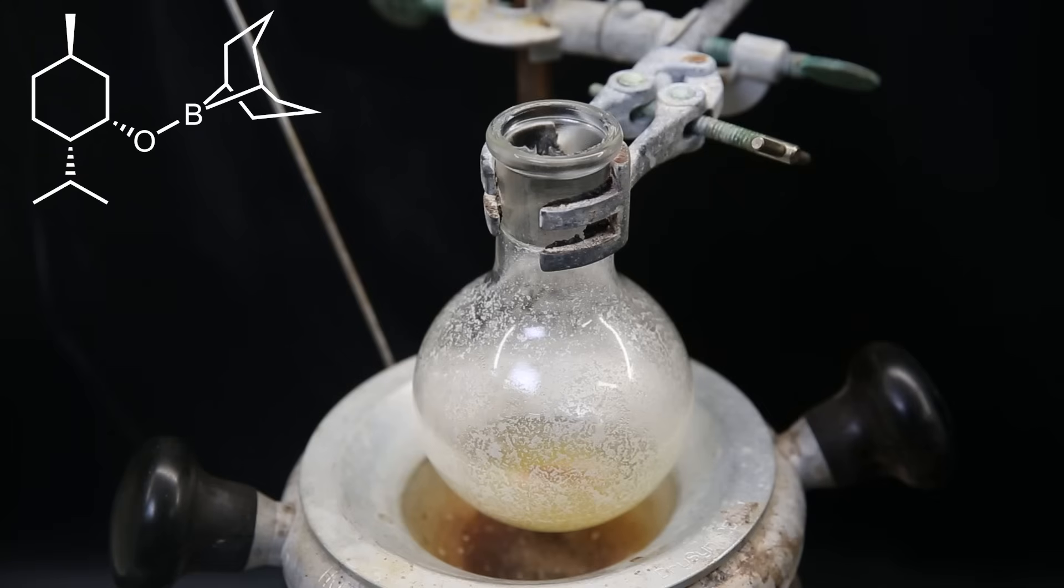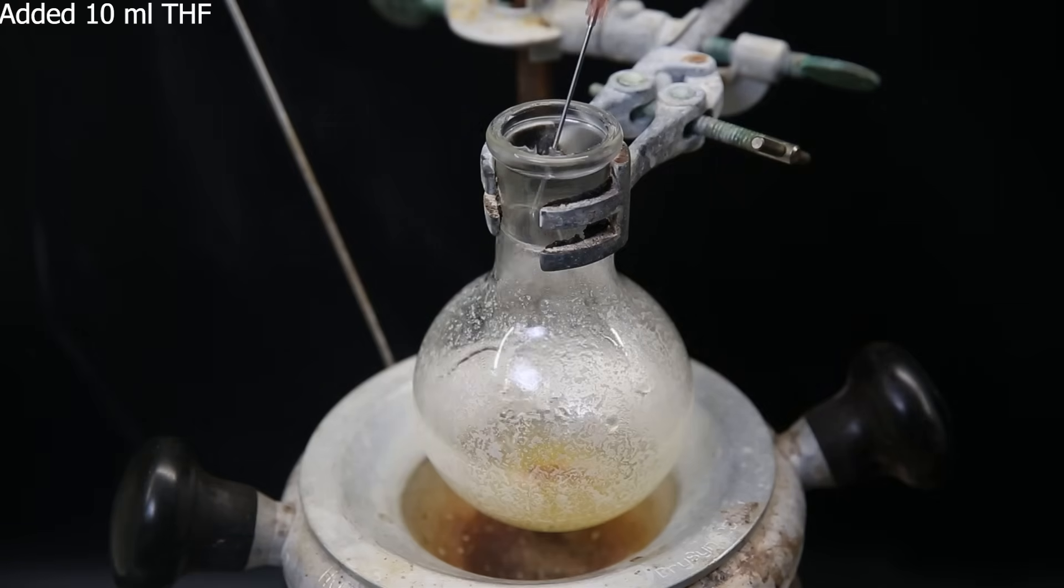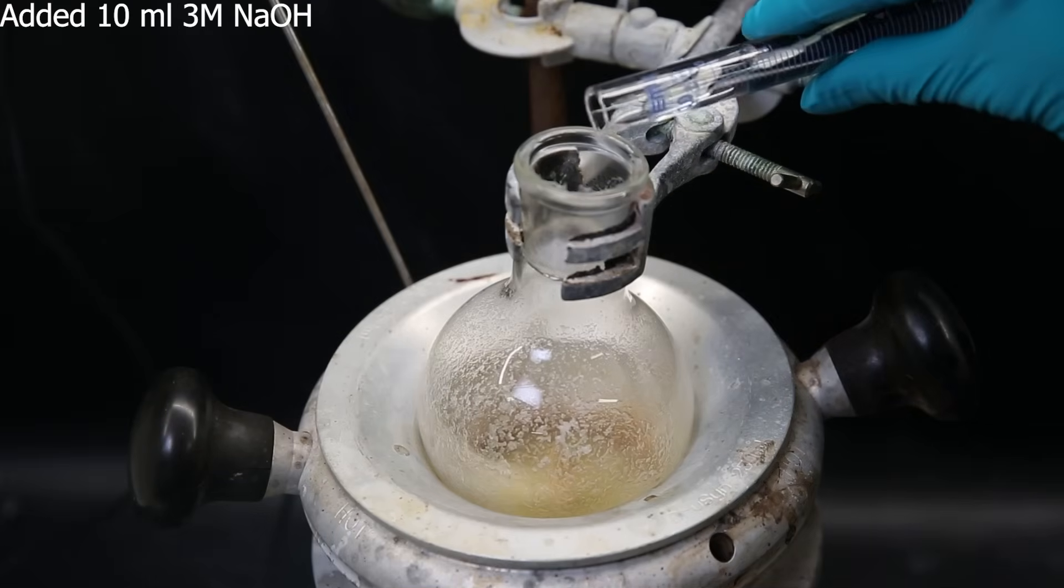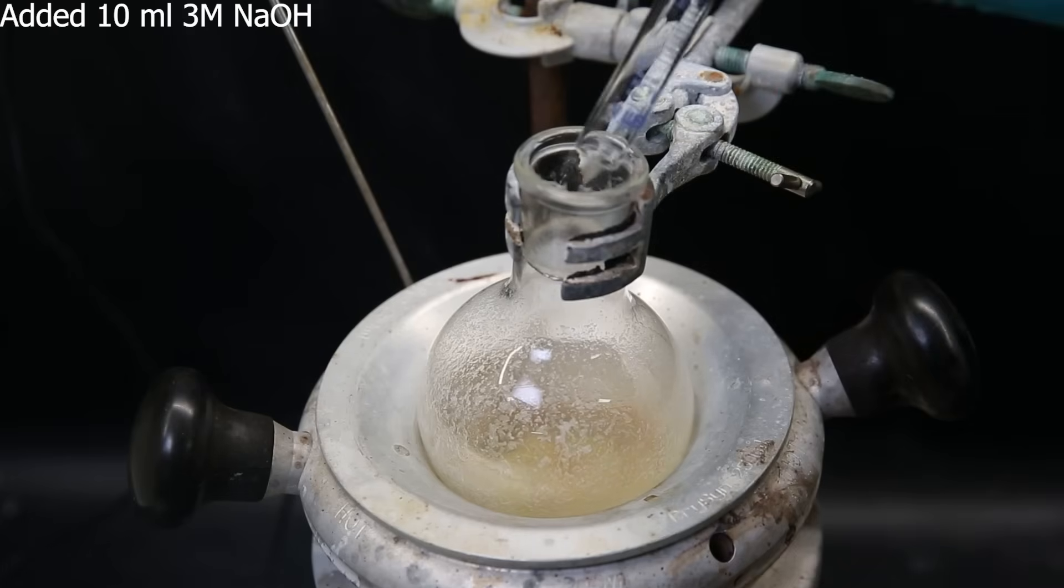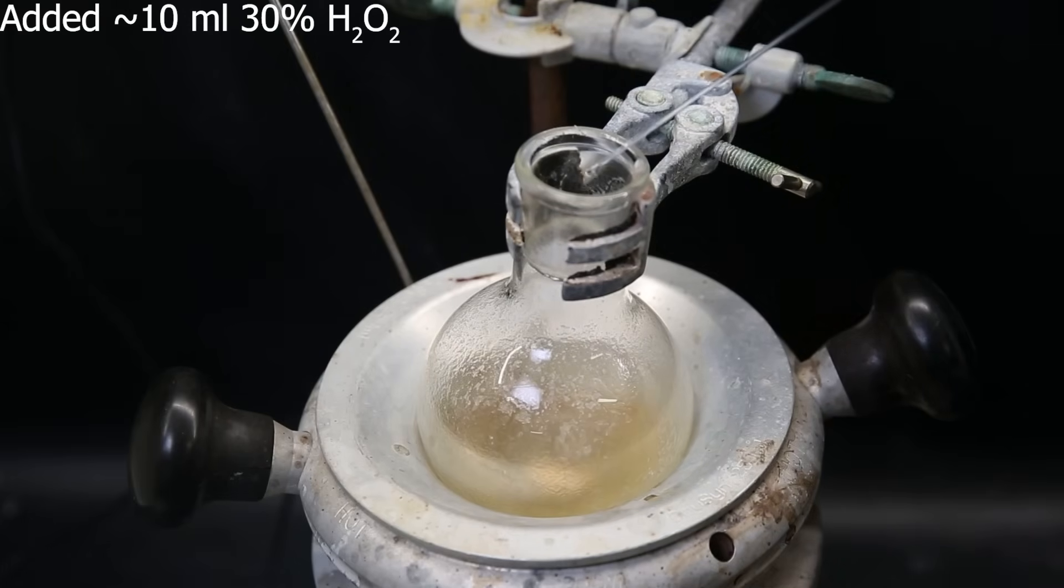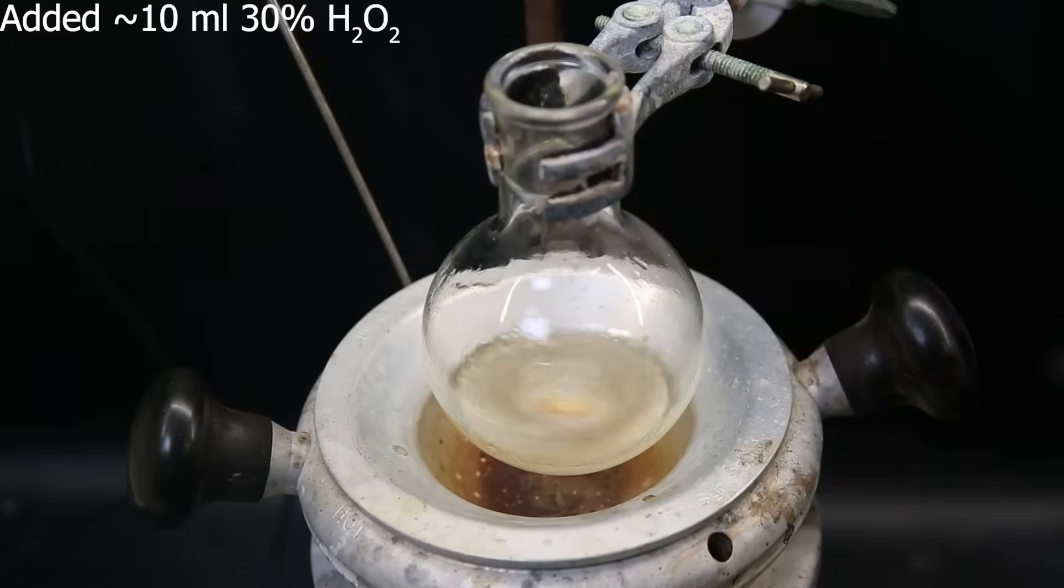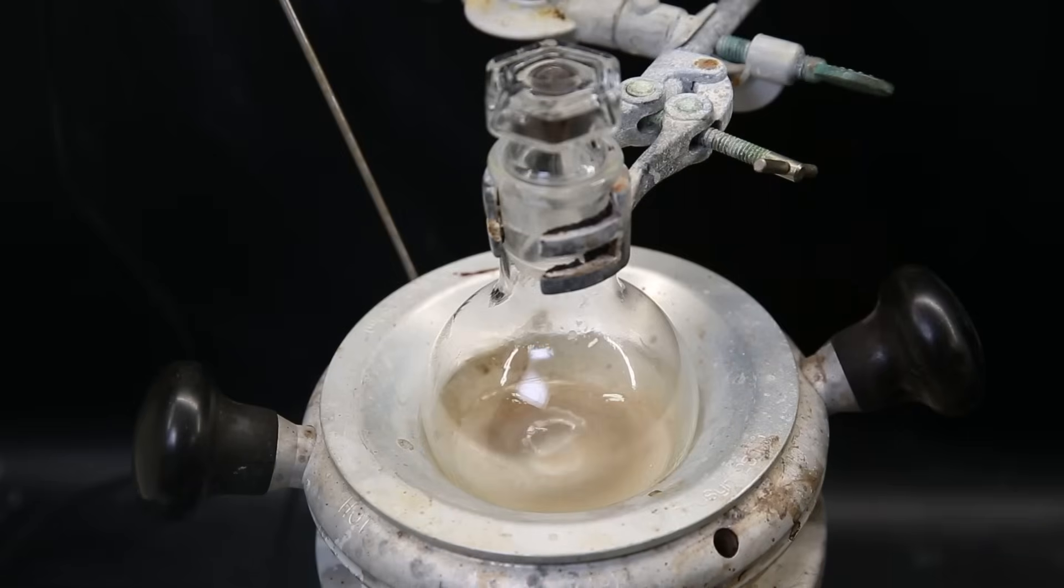Now it is time to destroy the borane product and generate the final alcohol. So I first add 10 mls of THF, and then add 10 mls of 3 molar sodium hydroxide. Now I add about 10 mls of 30% hydrogen peroxide. I add it gradually because the reaction is strongly exothermic. When the addition is complete, I stopper the flask and leave it to stir for a few hours at 40C.